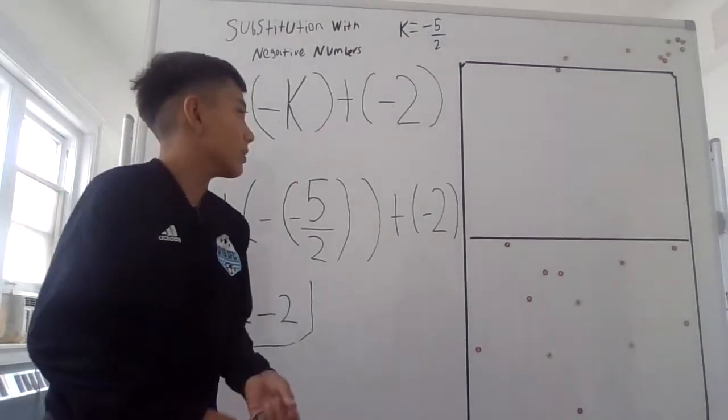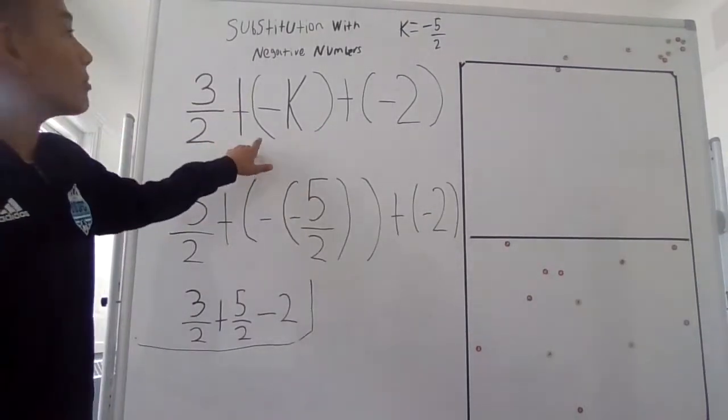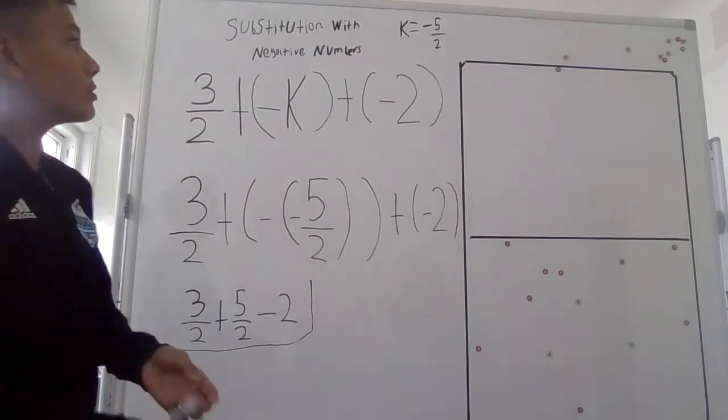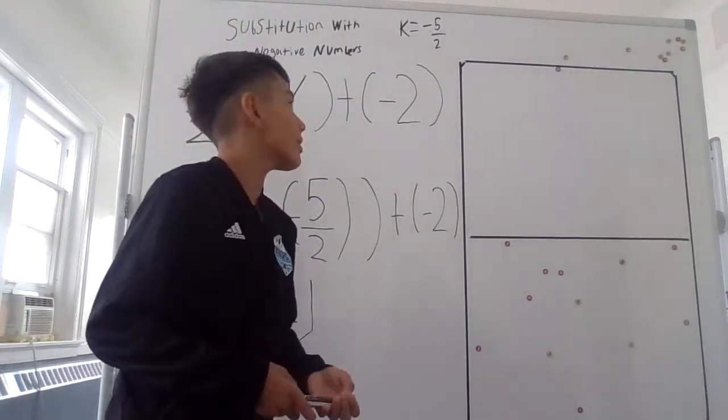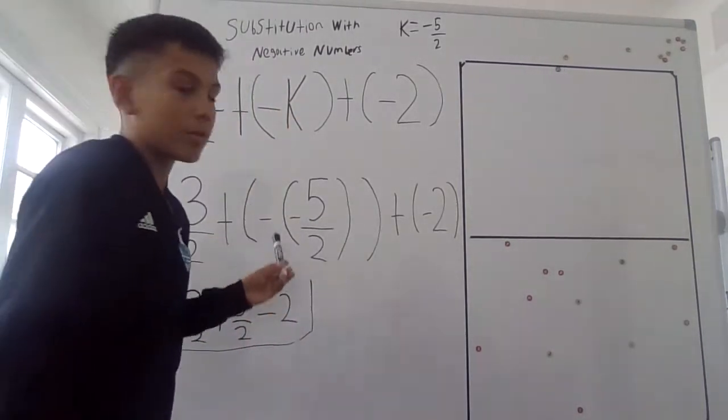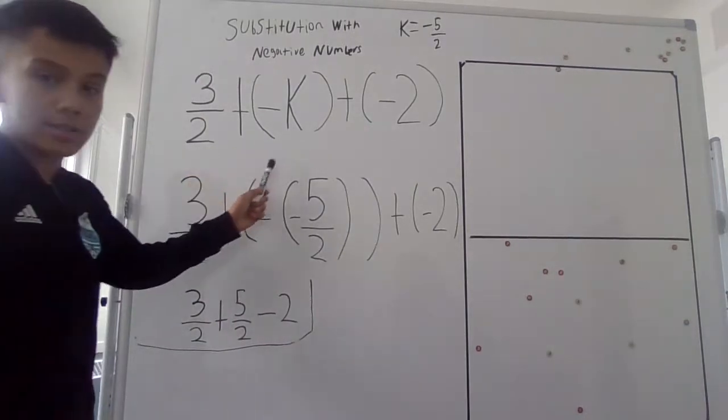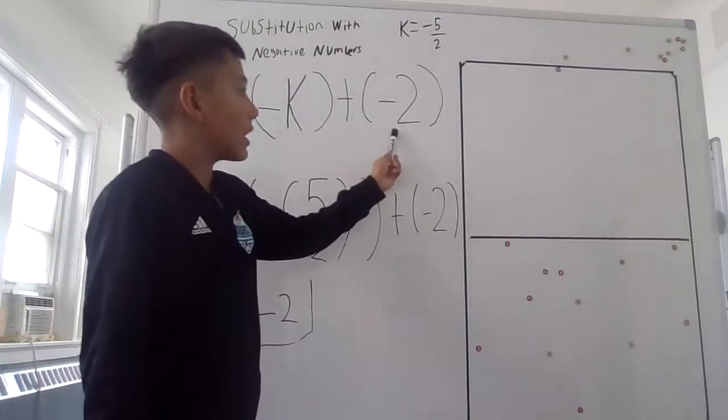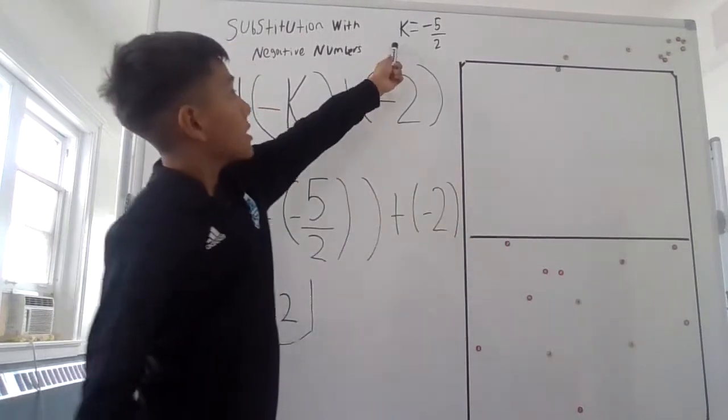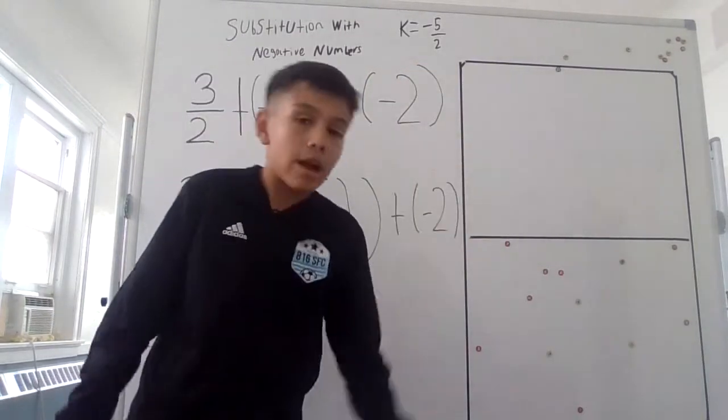Today I'm going to teach you guys how to answer this problem on the topic substitution with negative numbers. First, the problem was 3 over 2 plus negative k plus negative 2. And up here it says k equals negative 5 over 2.